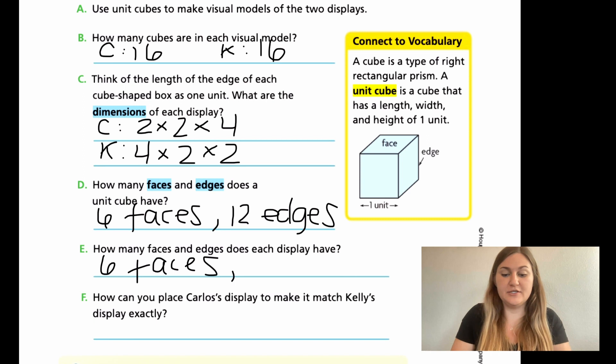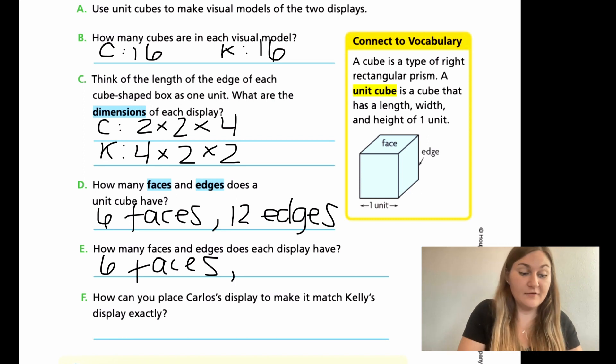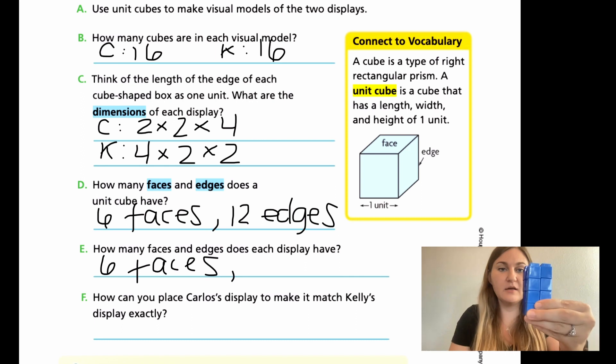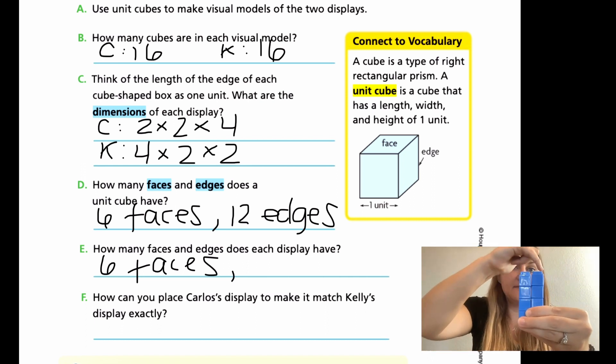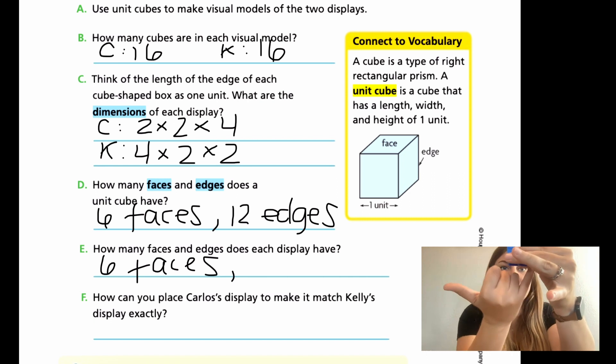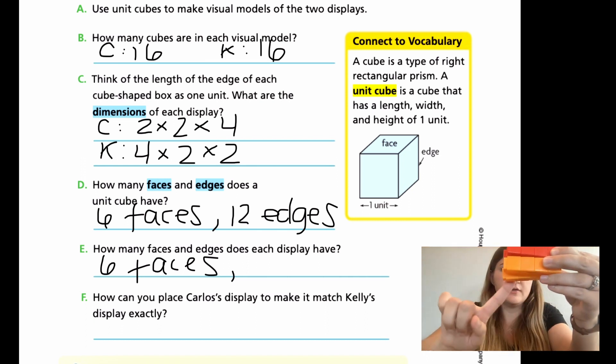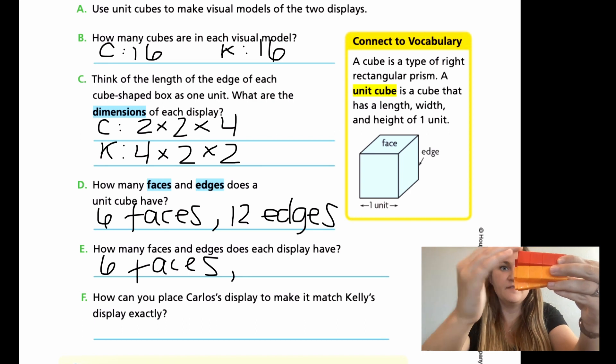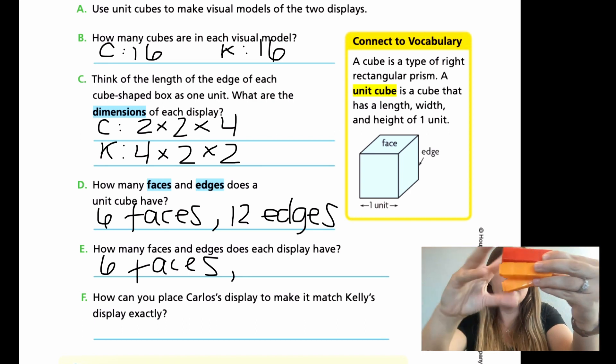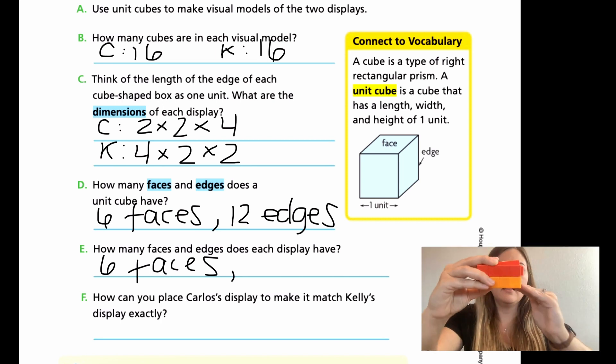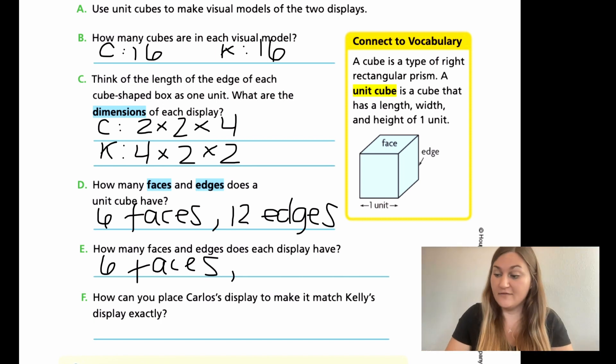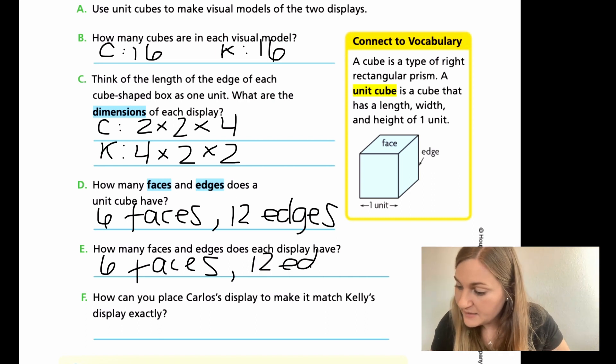And how many edges do you think each is going to have? You're right. If you're finding a pattern, you should be saying 12. Here we go. Let's make sure. One, two, three, four, and then top five, six, seven, eight. And on the bottom, nine, 10, 11, 12. Let's double check with Kelly's. Go all the way around. One, two, three, four, five, six, seven, eight, nine, 10, 11, 12. 12 edges. I'm seeing a pattern.